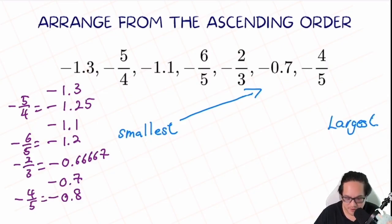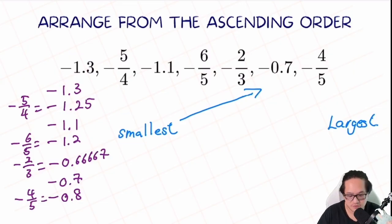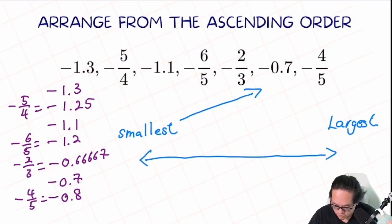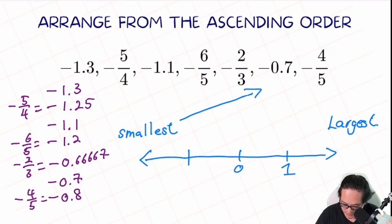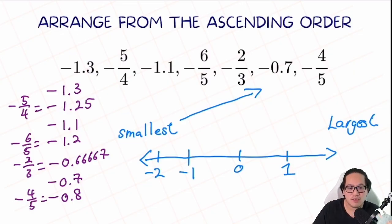The cool thing about negative numbers is that the bigger the unit value, the smaller the number actually is. If you need help, use a number line: on the number line, we have zero and one as positive, then negative one, then negative two. This means the bigger the number on the negative side, the smaller it actually is. If you need help with that concept, always draw the number line.